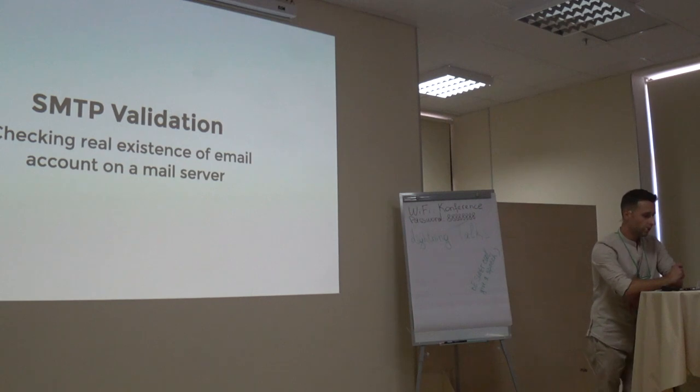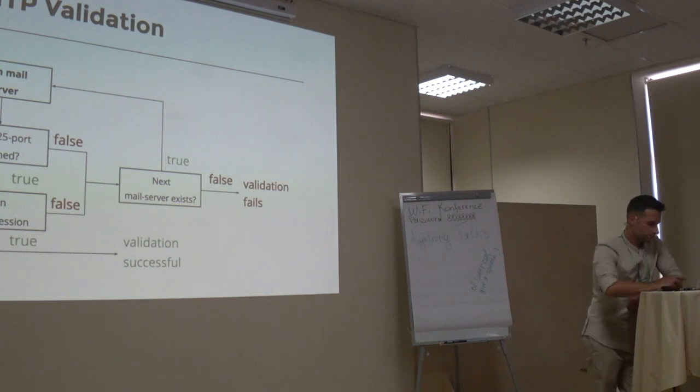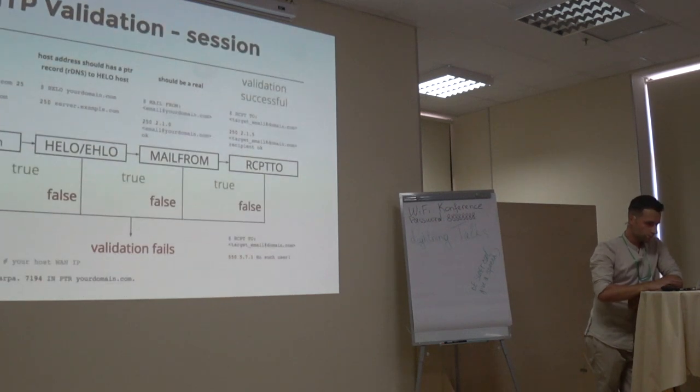SMTP validation is the last high-level email validation. The point of this method is trying to determine real existence of email address. SMTP validation is an iterator that consists of two parts. Host ports checking and SMTP session. Iteration is processing until SMTP session returns true. Otherwise, validation will be failed.